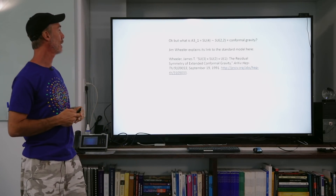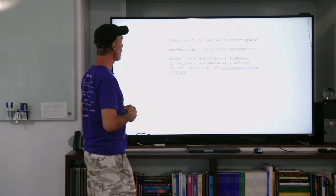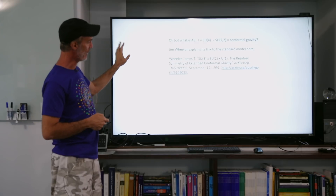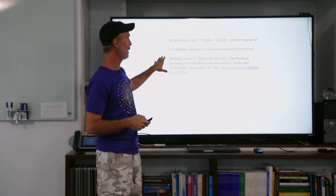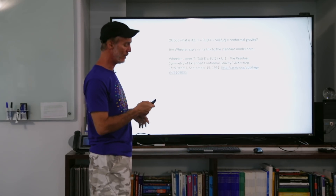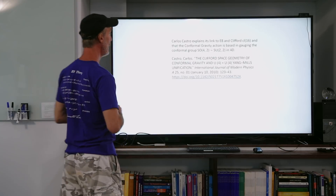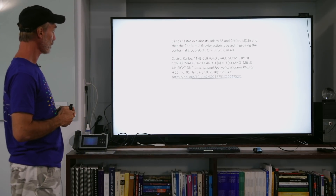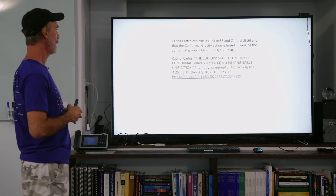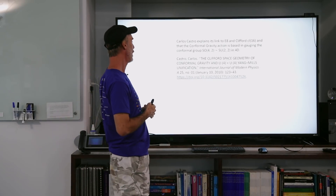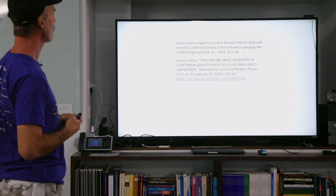What is A31 equals SU4? Jim Wheeler explains its link to the standard model in his reference. Carlos Castro explains its link to E8 and Clifford algebra CL16, and to conformal gravity — the conformal gravity action based on gauging the conformal group SO(4,2) in 4D. A Chern-Simons E8 gauge theory of gravity based on an octet E8 invariant was advanced as a unified field theory of Lanczos-Lovelock gravitational theory and an E8 generalized Yang-Mills field theory, defined in the 15-dimensional boundary of a 16-dimensional bulk space.